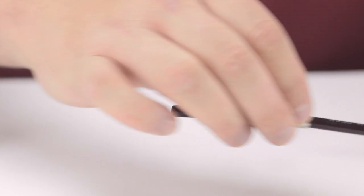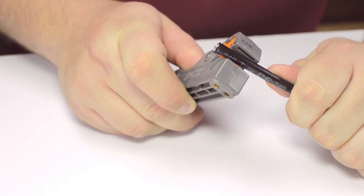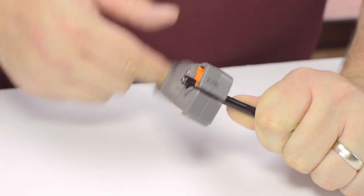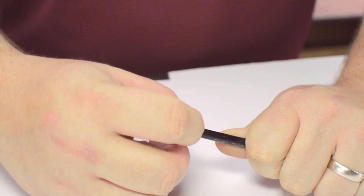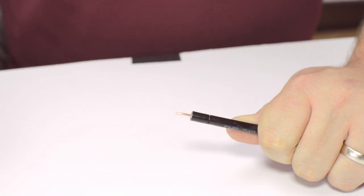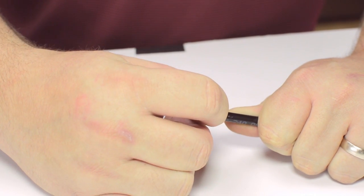Start by inserting the ferrule over the outer jacket of the cable. Then using your cable stripper, strip back the outer jacket and dielectric. The advantage of using a cable stripper is that it will strip back the jacket and dielectric at the same time.